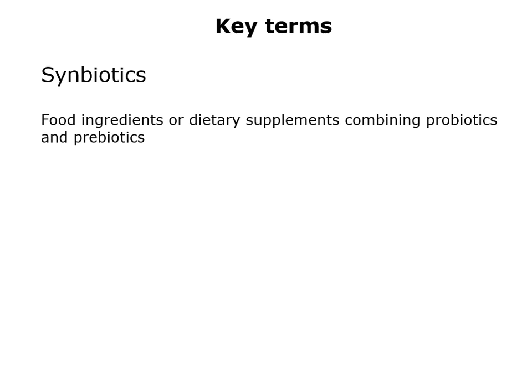Something else you might come across is the term symbiotics. These are food ingredients or supplements that combine both pro- and prebiotics. In research, pro- and prebiotics tend to be studied separately in earlier stages so we can understand which effects are caused by each. But if you think about probiotics as the live organisms and prebiotics as the food that helps them grow and flourish, you can see how having both in your diet could be beneficial — and having a supplement which combines both could be beneficial for certain individuals.